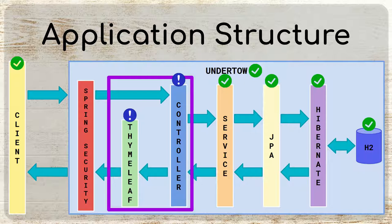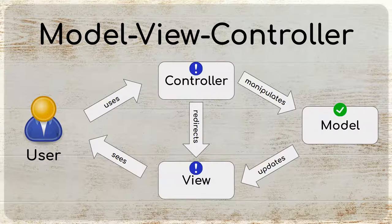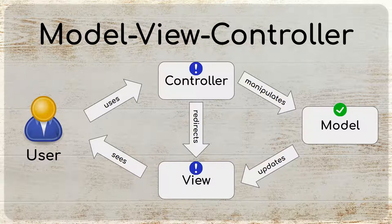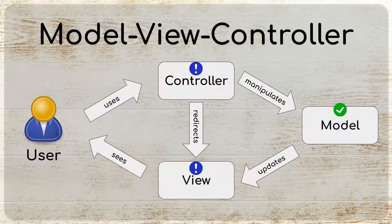In our last video, Part 3, we created the HTML pages using Thymeleaf and added the student controller which accepts requests and redirects to the appropriate view. We will continue working on these in this video and complete their implementations. The controller will make calls to the service layer to get data from the database and pass it on to the Thymeleaf view, which will render the final HTML page shown in the browser.